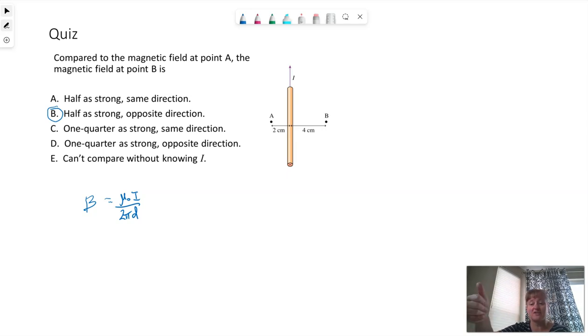our current is flowing towards the top of the screen. So if I put my thumb towards the top of the screen and I imagine my fingertips as arrows, if I have my fingertips to the left of my thumb, my fingertips are pointing towards me. So what that means is that the magnetic field points out of the screen towards me. So out on this side.